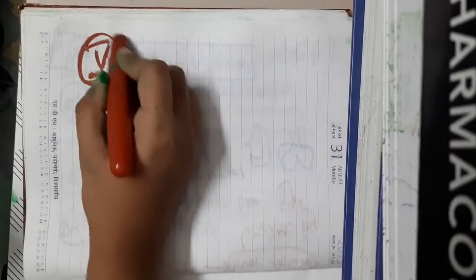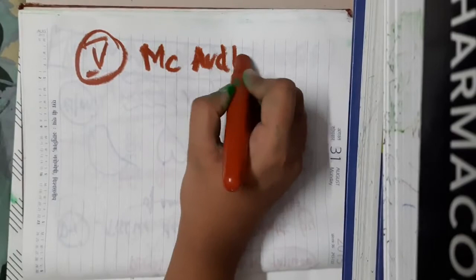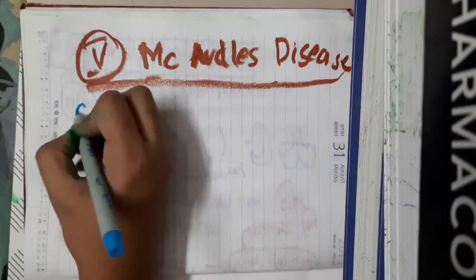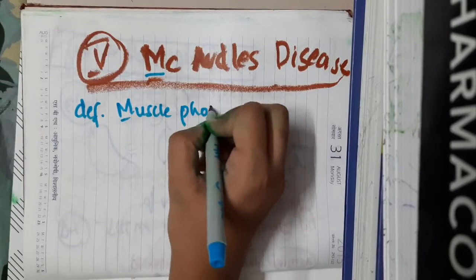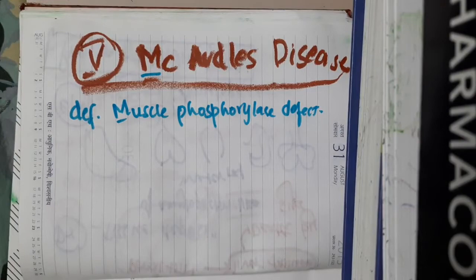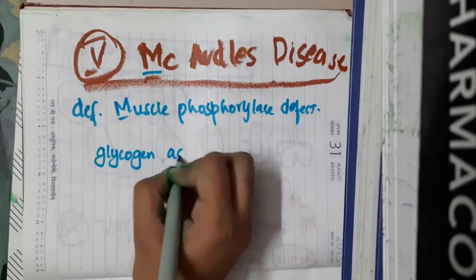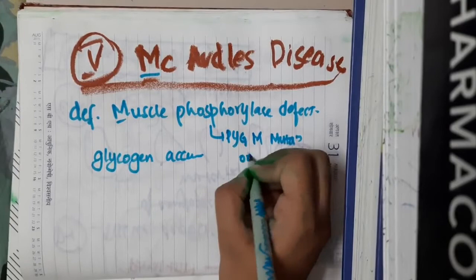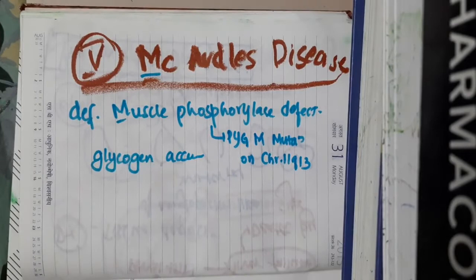Hello friends, let us now learn about type 5 glycogen storage disease, which is called McArdle's disease. You can remember M for muscle. The problem in McArdle's disease is mainly the deficiency of muscle phosphorylase. Because muscle phosphorylase is defective, this limits muscle ATP generation by glycogenolysis, and as a result glycogen gets accumulated in the cells. This occurs due to a defect of the PYGM gene mutation on chromosome 11q13.